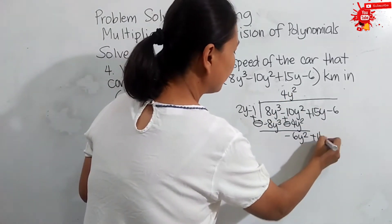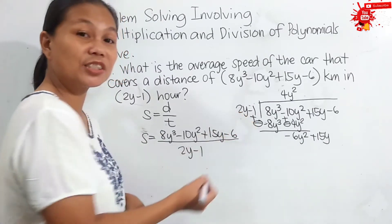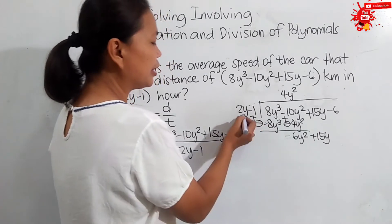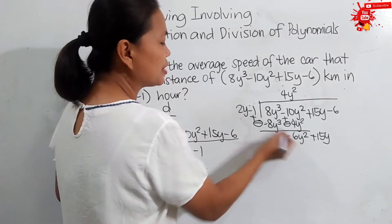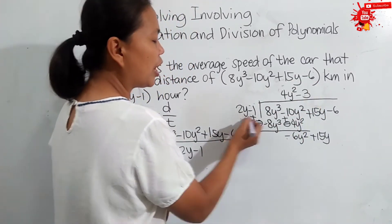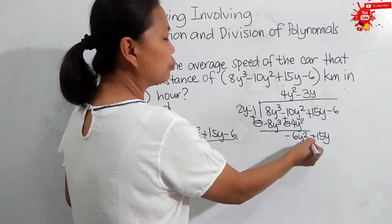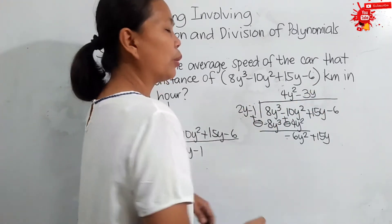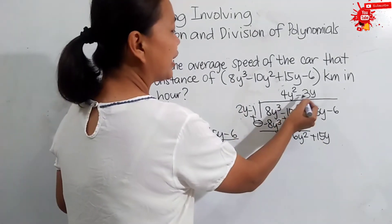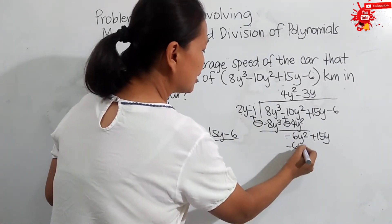We bring down positive 15y. Again, first term of the dividend divided by the first term of the divisor: negative 6y squared divided by positive 2y — negative 6 divided by 2 is negative 3, and y squared divided by y is simply y since we subtract exponents: 2 minus 1 equals 1. After getting the partial quotient, we multiply it to the divisor. Negative 3y times positive 2y gives us negative 6y squared.